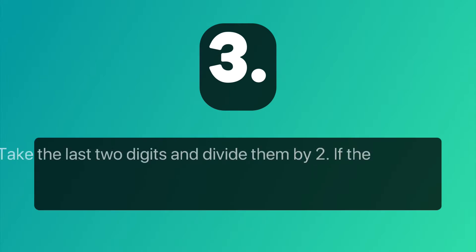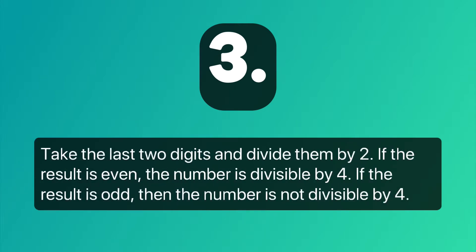Number 3: Take the last 2 digits and divide them by 2. If the result is even, the number is divisible by 4. If the result is odd, then the number is not divisible by 4.